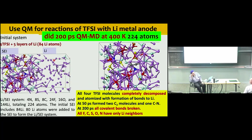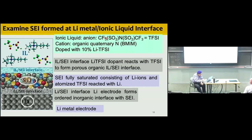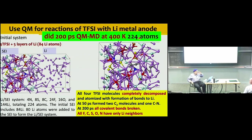What we found is that the ionic liquid TFSI — CF₃-SO₂-N-SO₂-CF₃ — reacts completely with the lithium metal. The carbon has only lithium neighbors, the fluorine has only lithium neighbors, the sulfur has only lithium neighbors, and so on. But that quantum mechanics can't do more than about 300 atoms or more than about 100 picoseconds, and we want to do 30 to 100,000 atoms.